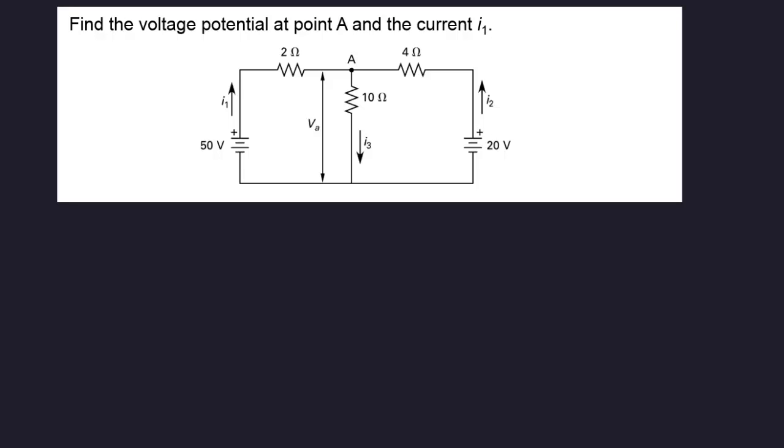Find the voltage potential at point A and the current I1. So the question is to find this voltage over here at A and this particular current over here, I1.